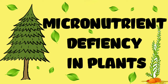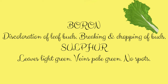In case of boron deficiency, discoloration of leaf buds is the primary symptom, and it will eventually lead to the breaking and dropping of buds. In sulfur deficiency, leaves will be very light green in color, veins will be very pale green in color, and no spots will be visible on the surface of the leaves.